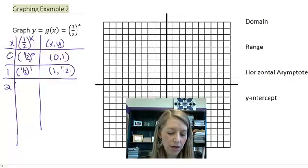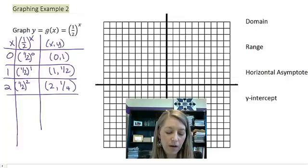If I plug 2 in here, I get 1 half squared. So I square both the numerator and the denominator. In the numerator, 1 squared gives me 1. In the denominator, 2 squared gives me 4. If I pick something slightly larger, like 5, 1 half to the fifth power gives me 1 to the fifth, or 1, 2 to the fifth, or 32.